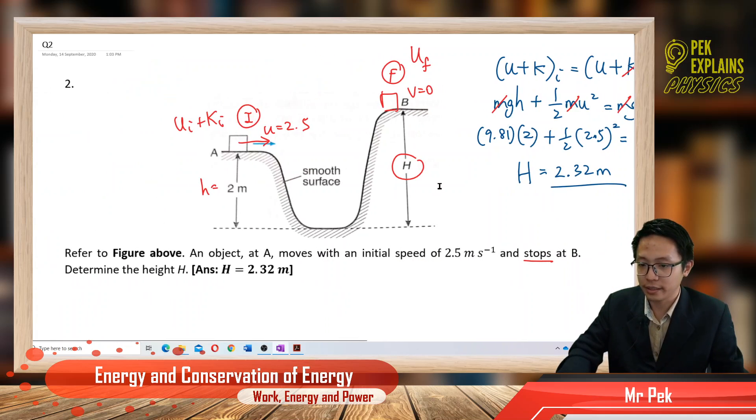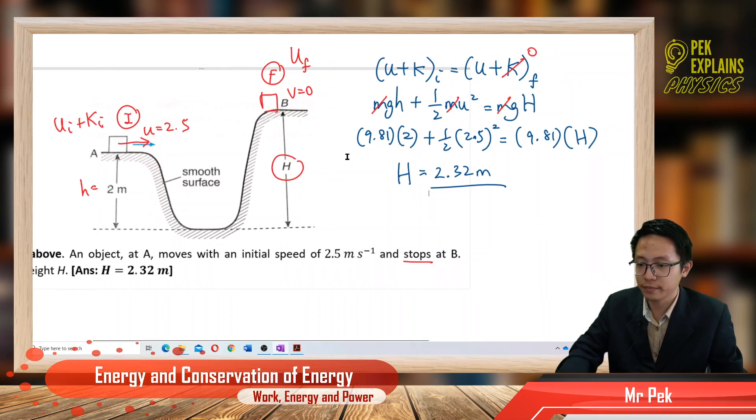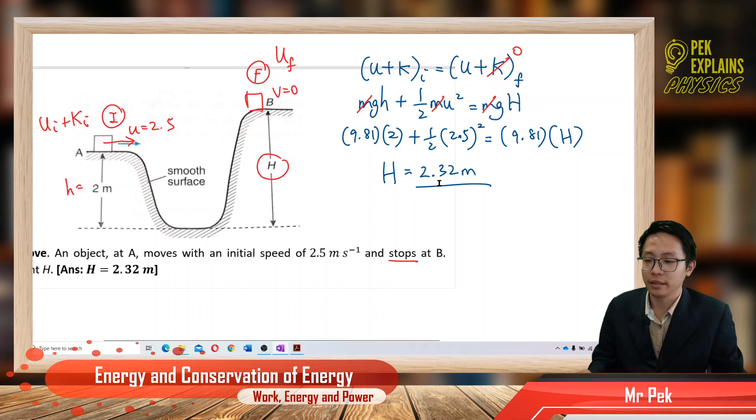That's the height. It reached at the top here. That's the final height. Initial height is only 2, but final height is 2.32. It goes to a higher potential energy because the kinetic energy all has converted to potential energy, so resulted in bigger gravitational potential energy, also at a bigger height. That's all for this question. See you in the third question.